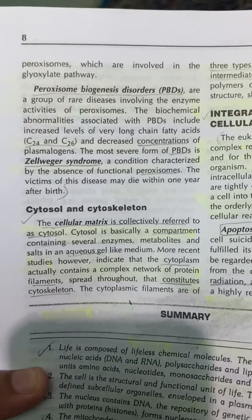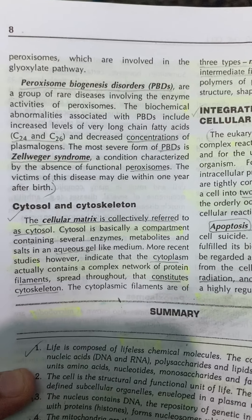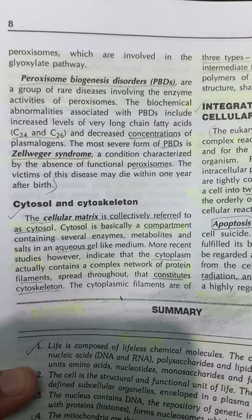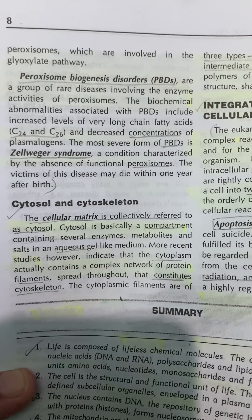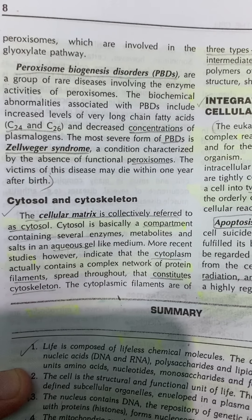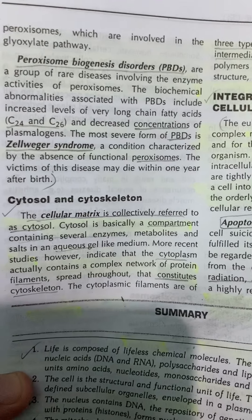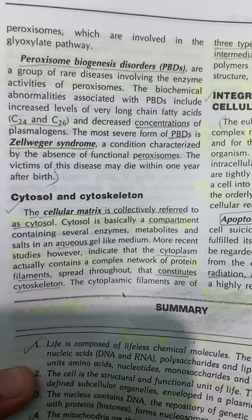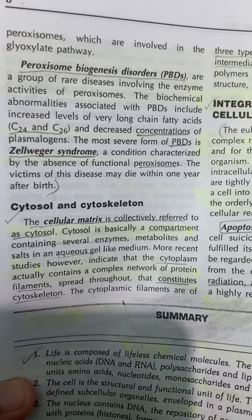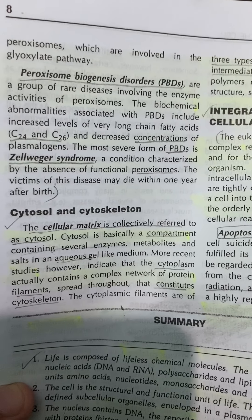Plants contain glyoxysomes, a specialized type of peroxisome involved in the glyoxylate pathway. Peroxisomal biogenesis disorders (PBDs) are a group of rare diseases involving the enzyme activities of peroxisomes. Biological abnormalities associated with PBDs include increased levels of very long chain fatty acids (C24 and C26) and decreased concentrations of plasmalogens. The most severe form of PBDs is Zellweger syndrome, characterized by the absence of functional peroxisomes; victims of this disease may die within one year after birth.